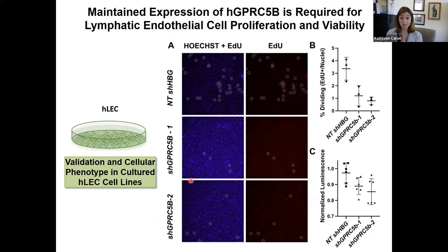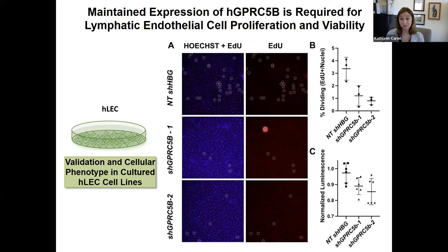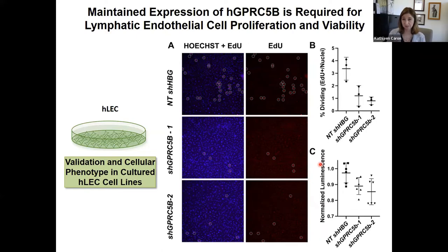To mechanistically examine the role of GPRC5b in lymphatic endothelial cells, we turned to an in vitro culture system, knocking down GPRC5b expression using two different shRNA constructs. The red dots and circles show that absence of GPRC5b is associated with a marked attenuation in continued proliferation and viability of lymphatic endothelial cells. This tells us cell-autonomously — independent of external growth factors or potential ligands — that GPRC5b within the lymphatic endothelium is required for the maintenance and viability of these cells.